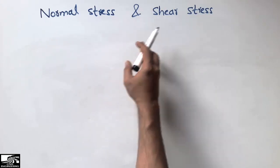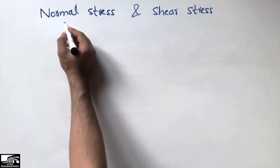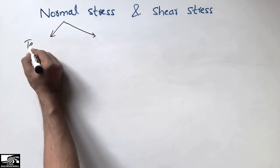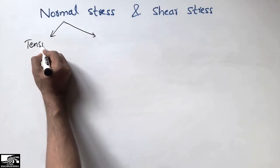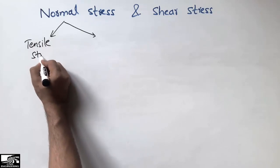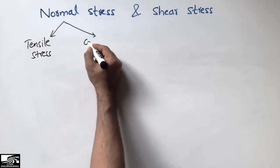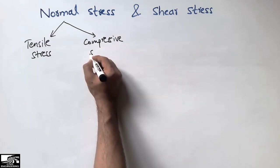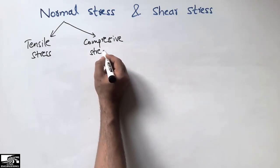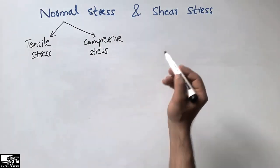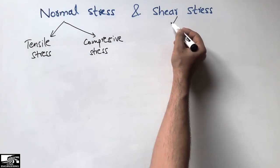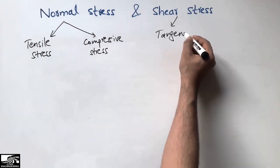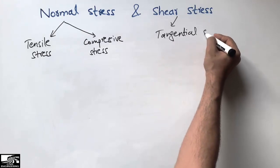Normal stress has two types: one is called tensile stress and the other is compressive stress. Shear stress is sometimes also called tangential stress. I will explain each one in detail.